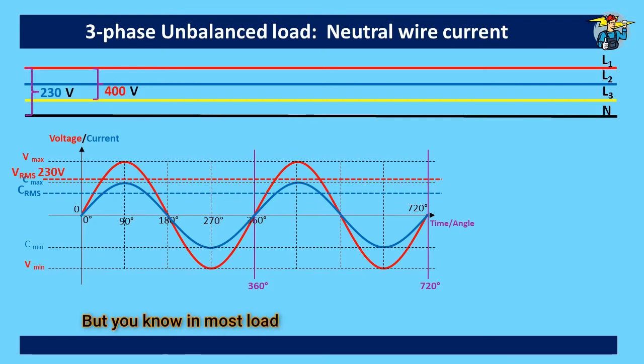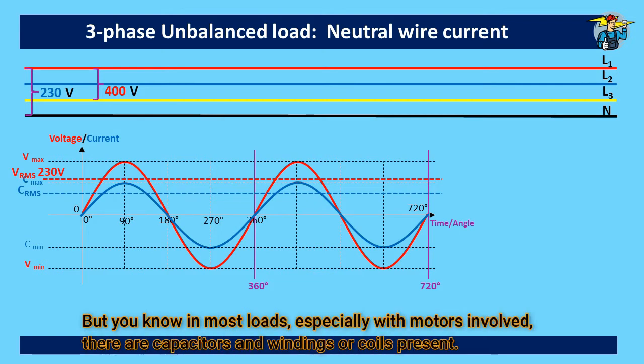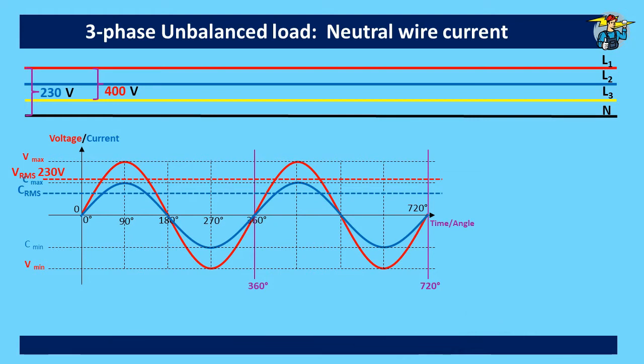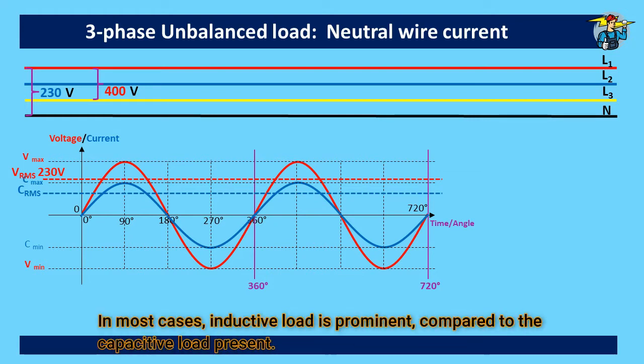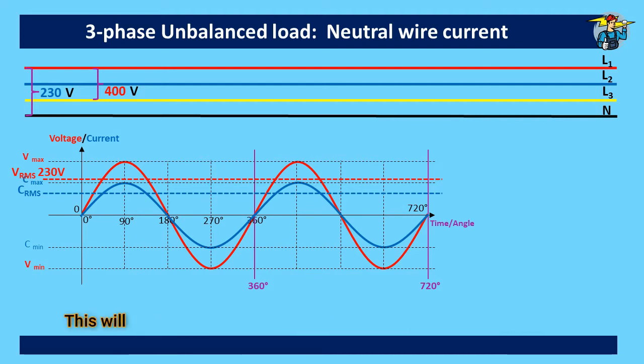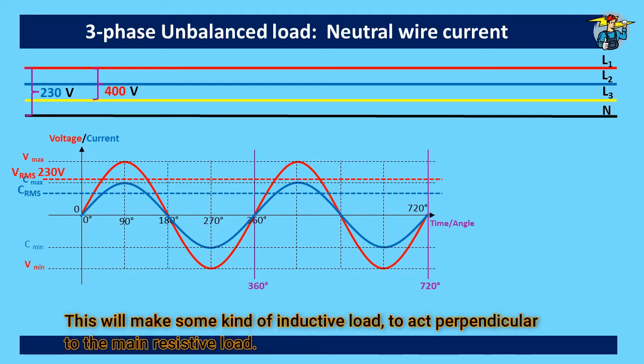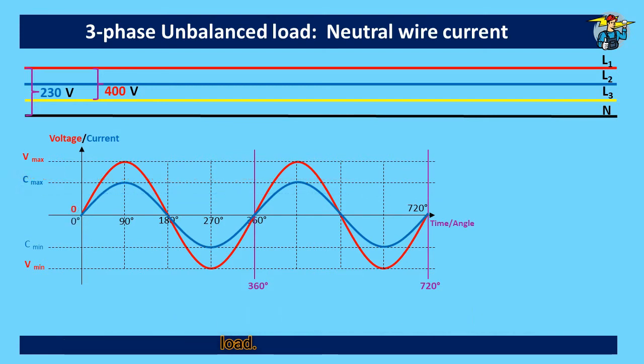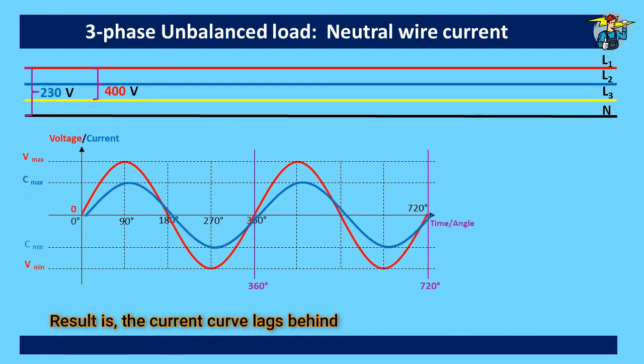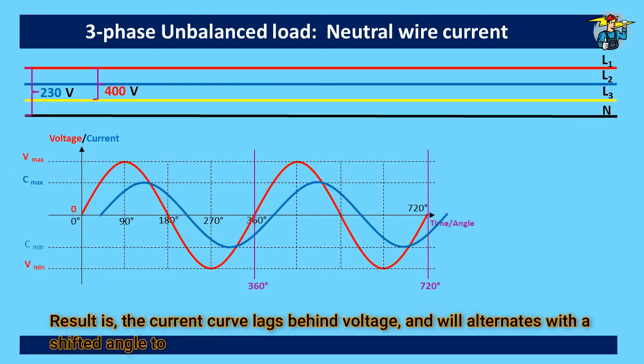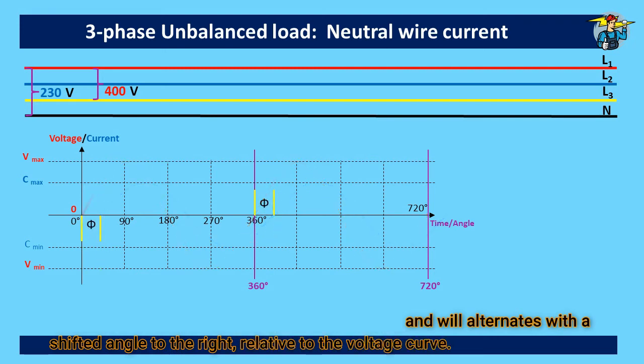But you know in most loads, especially with motors involved, there are capacitors and windings or coils present. In most cases, inductive load is prominent compared to the capacitive load present. This will make some kind of inductive load to act perpendicular to the main resistive load. Result is, the current curve lags behind voltage, and will alternates with the shifted angle to the right, relative to the voltage curve.